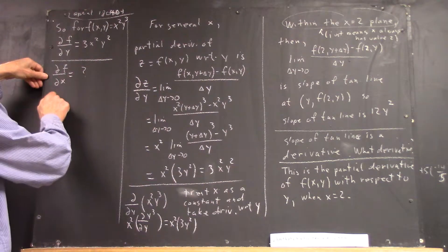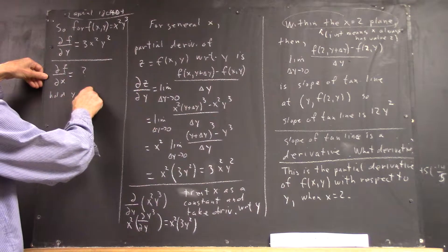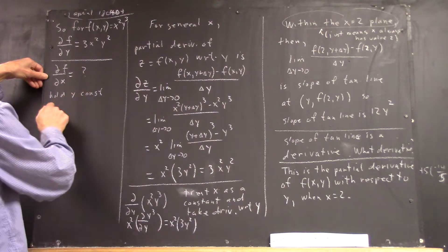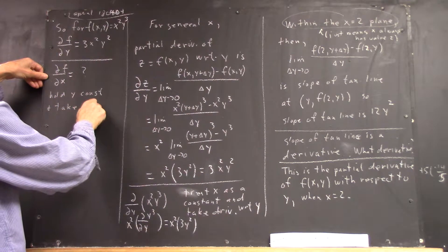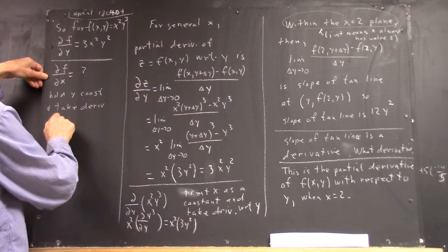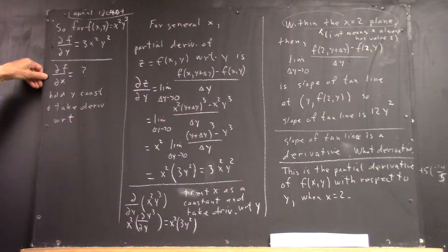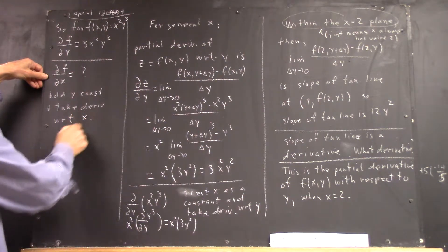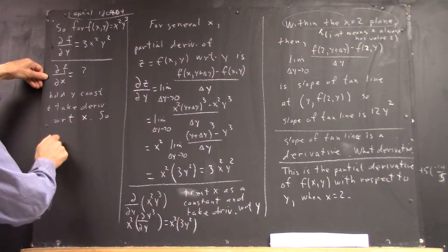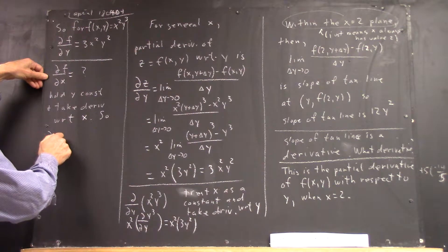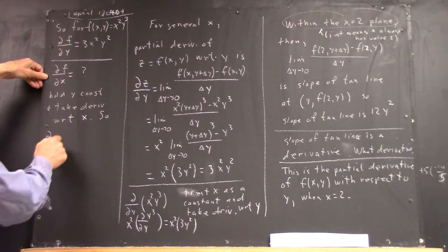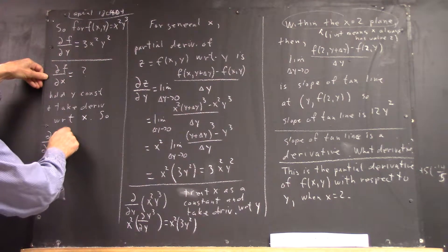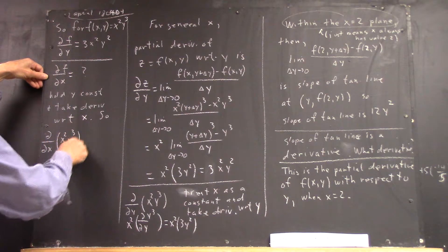Hold y constant and take the derivative with respect to x. So the partial of f with respect to x would be the partial with respect to x, then, of x squared y cubed, right?